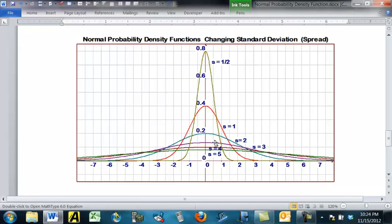The purple one's 3, and here's 4 and 5. And so notice as the standard deviation gets bigger, it gets further spread out.